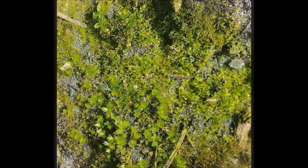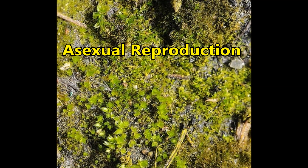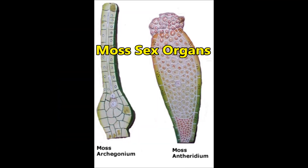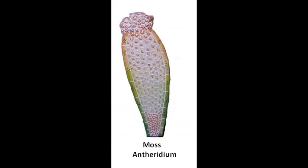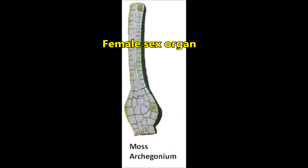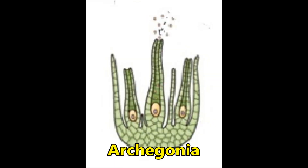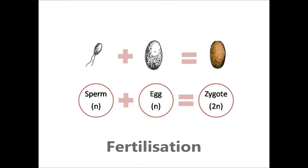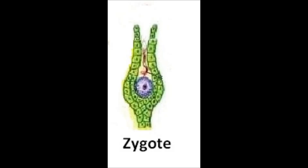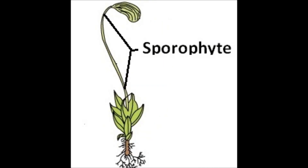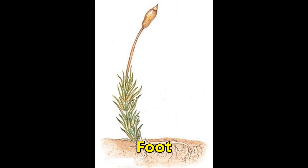Reproduction in Mosses: Asexual reproduction takes place by fragmentation and budding. Sexual reproduction occurs by forming male and female gametes. The male gamete is called antheridium and the female gamete is called archegonium. After fertilization, the zygote develops into a sporophyte. The sporophyte consists of three structures: foot, seta and capsule.